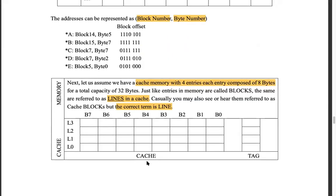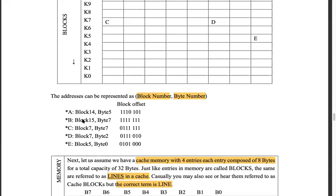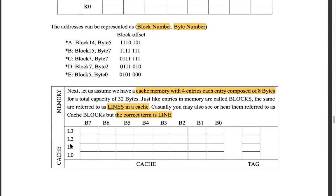Now let's introduce our cache memory. Let's assume we have a cache memory with four entries and each entry is composed of 8 bytes, for a total of 32 bytes. The terminology: block is reserved for main memory; in cache we call it a line — a row in cache is called a cache line. So cache lines L0, L1, L2, L3 — in total you have 4 × 8 = 32 bytes of memory for cache.